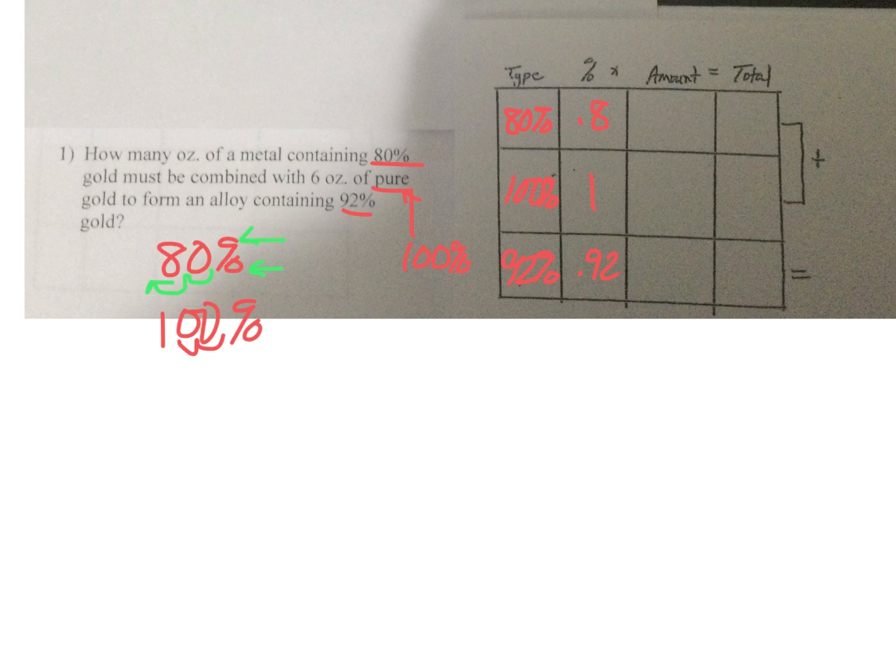We take the amounts for each. How many ounces of 80%? We don't know, so since it's our unknown, we're going to make that our variable X, mixed with 6 ounces of pure, so this is 6. Then we have our mixture, which is X plus 6. We end up with 0.8X plus 6 equals 0.92 times X plus 6.